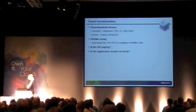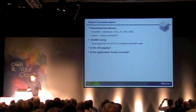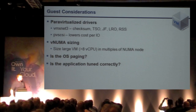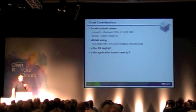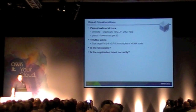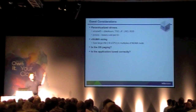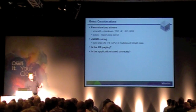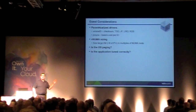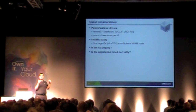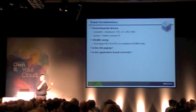For the guest OS, we want to do some simple things: use the paravirtualized drivers. VMXNet3 should be the default network adapter for almost every workload. For your biggest workloads — big databases, big messaging — you should switch to the pvSCSI driver in those guests. LSI Logic SAS is fine by default for everything else, and the two drivers perform about the same, but pvSCSI accomplishes it at lower ESX host CPU cost.